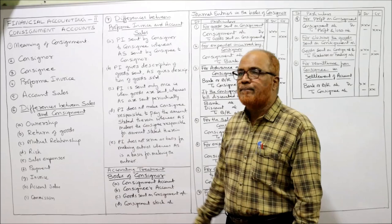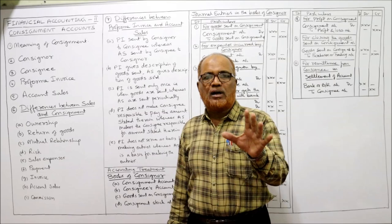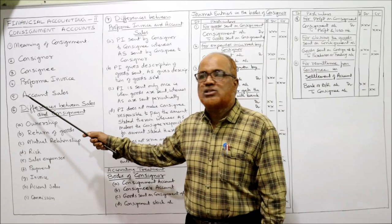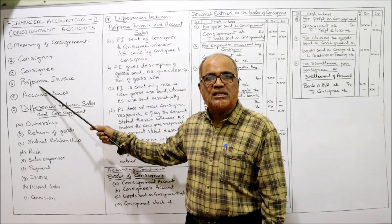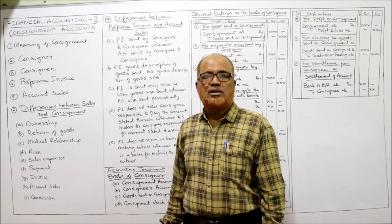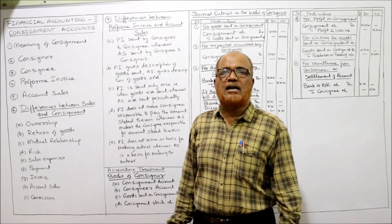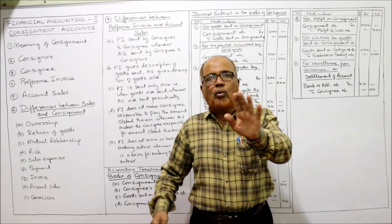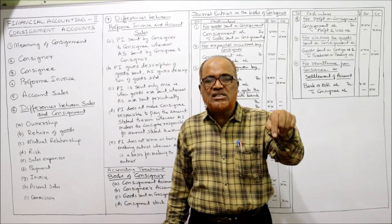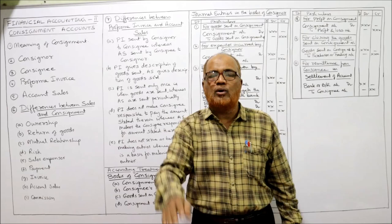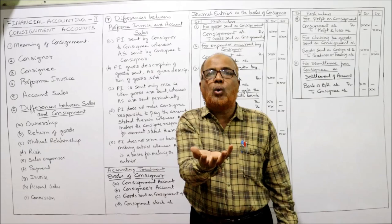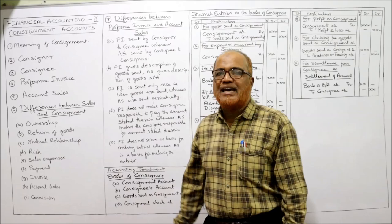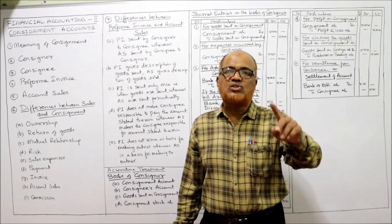Now, differences between Sales and Consignment — very frequently asked as theory questions in examination. Regarding ownership: in case of consignment, goods are transferred but ownership is not transferred; ownership is still retained with the Consigner, who is only sending the goods not selling them, so the Consignee gets possession not ownership. But in case of sale, as soon as the goods are sold, ownership is transferred from seller to buyer.